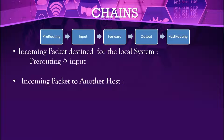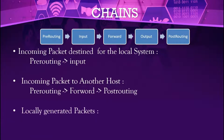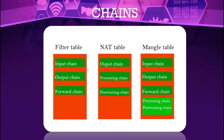Incoming packages go through: pre-routing, then input. For forwarded traffic: pre-routing, forward, and post-routing. Locally generated packages go through output and then post-routing. The filter table has three chains: input, output, and forward. NAT also has three chains: output, pre-routing, and post-routing. Mangle is a combination of NAT and filter. We are using filter and NAT only.